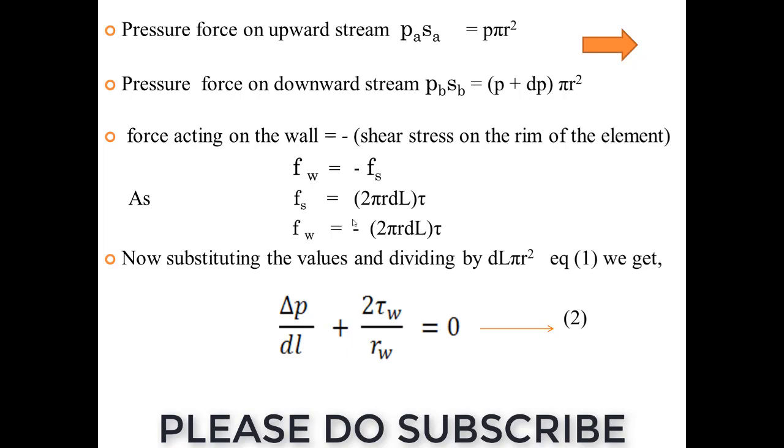Pressure force on upstream area is PA times SA, which is P times pi R squared, and the downstream is P plus dP times pi R squared. We have already carried out the force acting on the wall, and that is nothing but the shear stress acting on the rim of the element, minus Fs. That force is acting on the circumference of the rim.